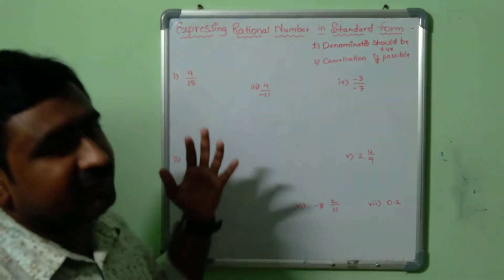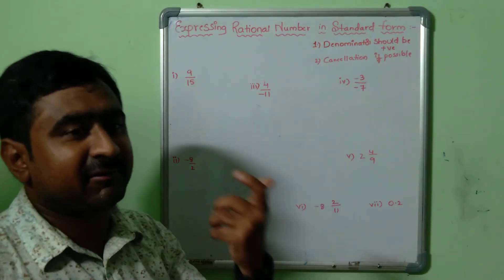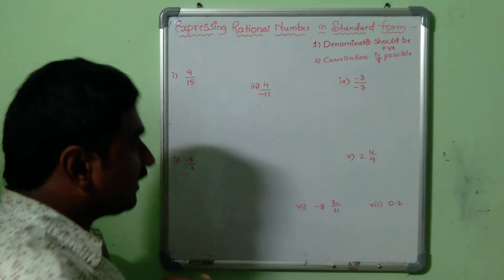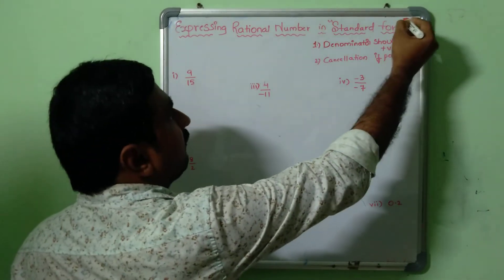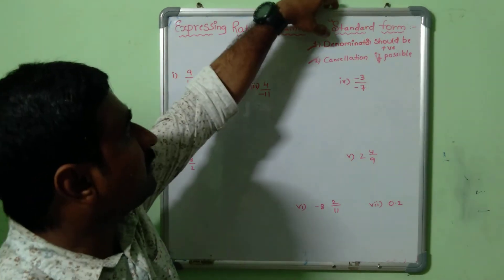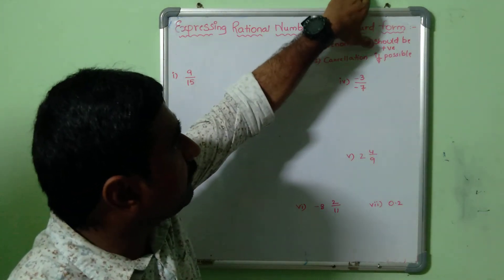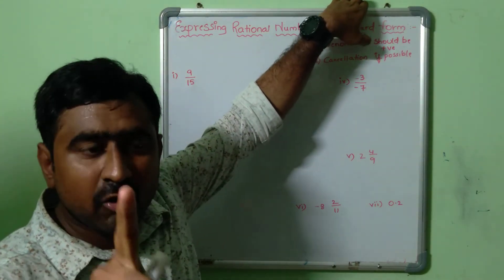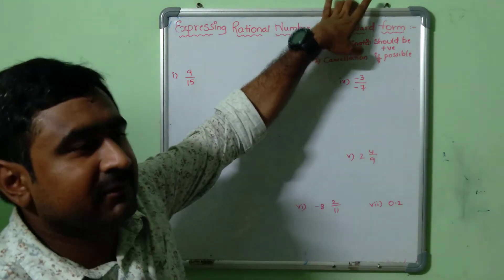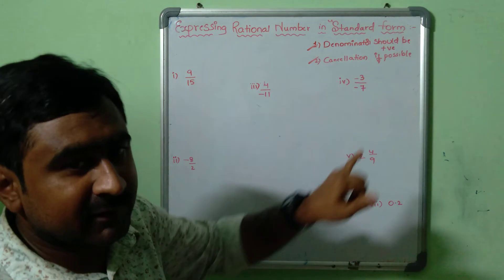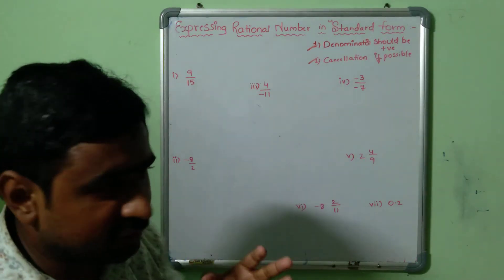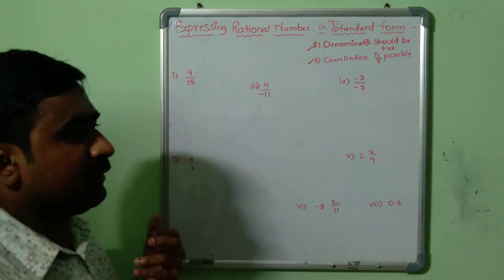Keeping these two points in mind, let us start a few examples to express the given rational number into standard form. On the board, the two rules are: first, denominator should be positive; and second, if there is any chance of cancellation we shall try it, otherwise leave the fraction as it is.